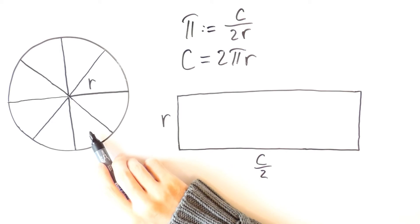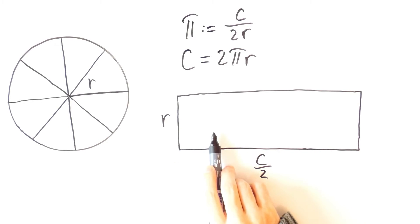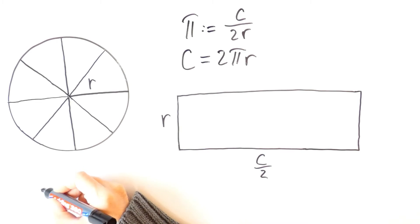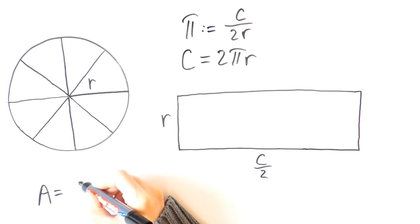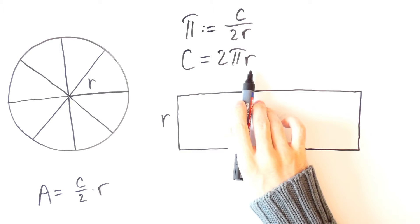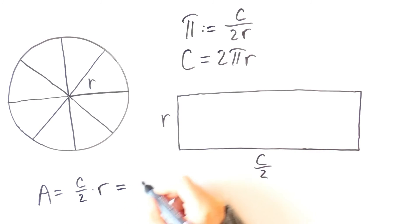The area of the circle is equal to the area of this rectangle. This side of the rectangle is equal to the radius of the circle, while this side is one half of the circumference. So the area of the circle is equal to c over 2 times r, and here is why we needed to know what is the circumference of the circle. So the area is equal to 2 pi r over 2 times r, which is equal to pi r squared.